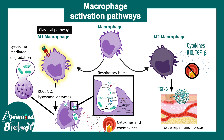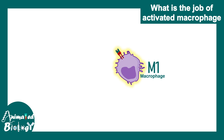The M1 macrophage is activated via the classical pathway, while M2 macrophages are activated via the alternate pathway. The cytokines that trigger activation of M1 and M2 macrophages are different. Let's see how M1 macrophages are associated with chronic inflammation.